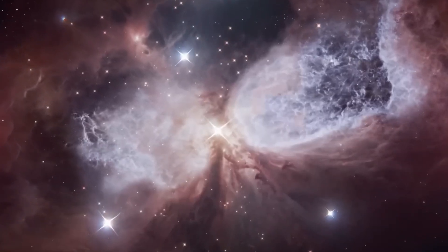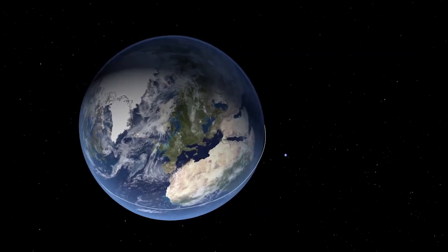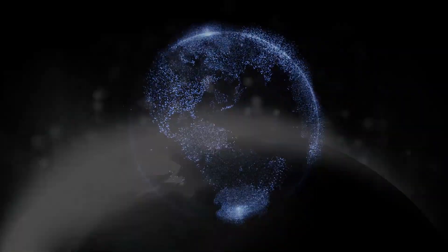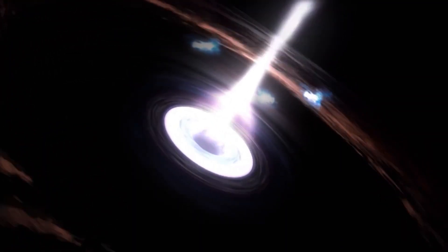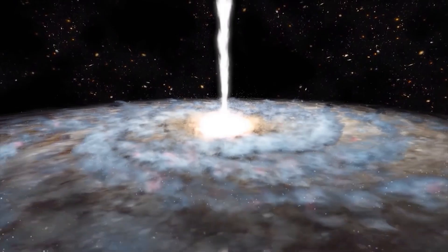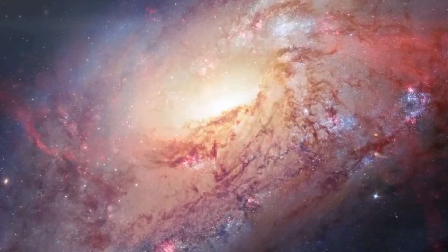One of the most exciting prospects of gravitational lensing is its potential to unlock the mysteries of the early universe. The light from the most distant galaxies has traveled for billions of years to reach us, providing a glimpse into the universe's past. By studying these ancient galaxies, astronomers hope to understand how the first stars and galaxies formed, how they evolved, and what conditions were like in the early universe. However, these distant galaxies are often incredibly faint, making them difficult to observe directly. Gravitational lensing provides a solution to this challenge by magnifying the light from these distant objects, making them visible to telescopes on Earth and in space.